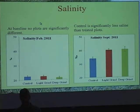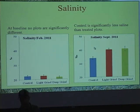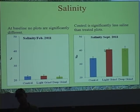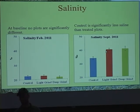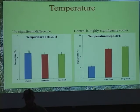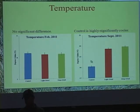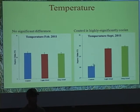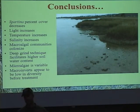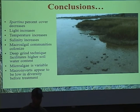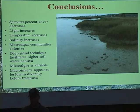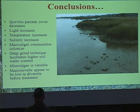Here's where some really interesting things come in. For salinity, in the baseline data there's no significant difference. Afterwards, light grind and deep grind are highly significantly different from the control — P value was 0.0017. Temperature showed no difference within the canopy, but on the order of 2.5 × 10⁻⁵ P value, the temperature is significantly cooler underneath the Spartina. That makes sense — with the plants removed, it's warmer, more evaporation occurs, and I would imagine salinity drops on plots where Spartina has been removed.